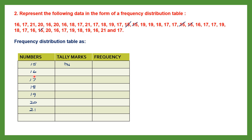For 16: counting through the data, we find four in the first row, making four tally marks. Then a fifth gives us a bundle, and two more after that. So we have a bundle of five plus two more, giving a frequency of 7.